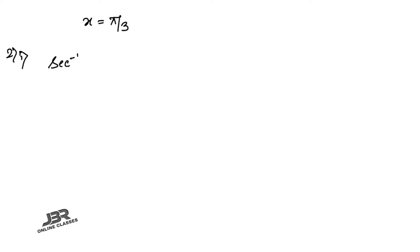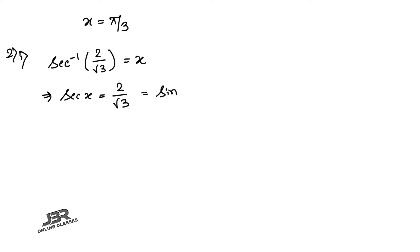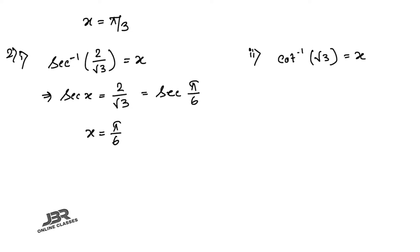Sum number 2.1: sec⁻¹(2/√3) = x, so sec x = 2/√3. Since 2/√3 is the value of sec(π/6), therefore x = π/6.